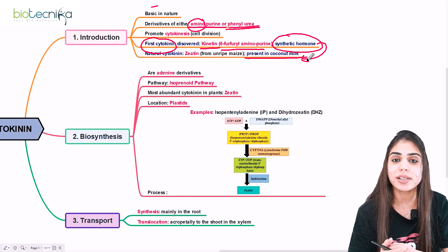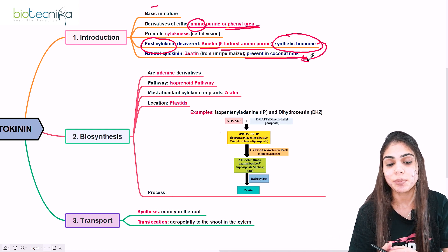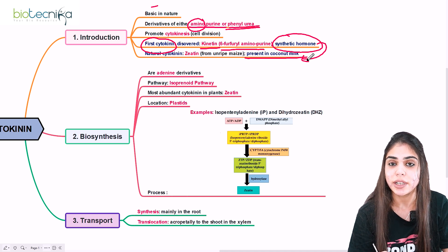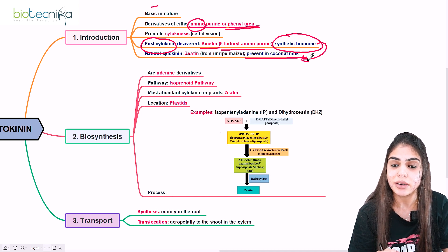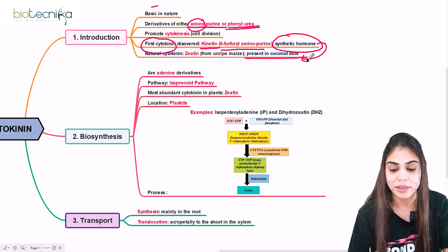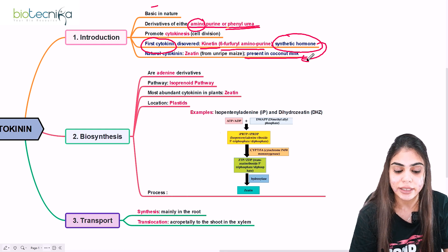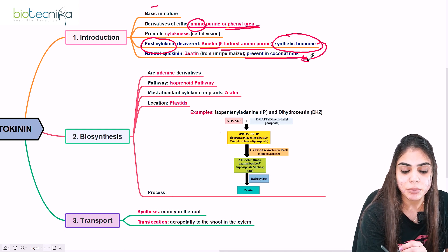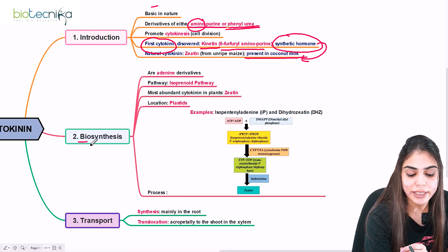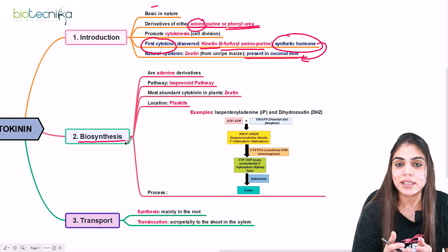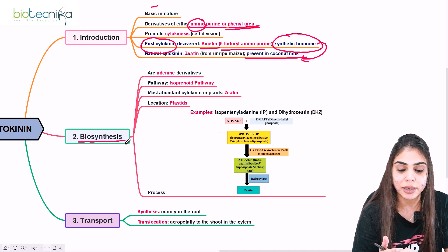The natural cytokinin in plants is zeatin because it was isolated from unripe Zea mays, that is maize, and that is why it is called zeatin. Now let's look at the biosynthetic pathway — cytokinin biosynthesis in plants.